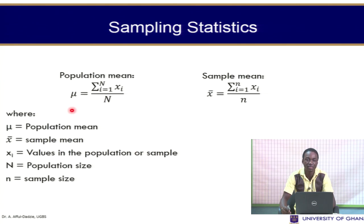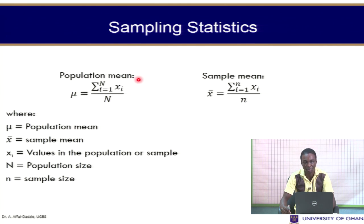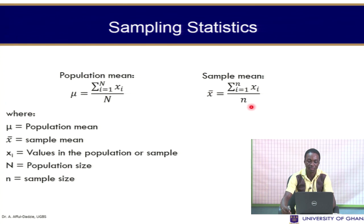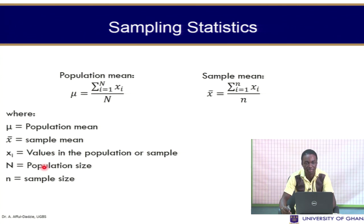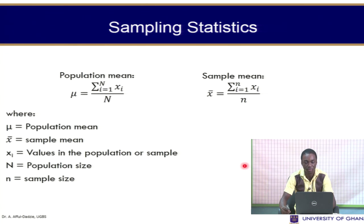The population mean is given as the sum of all the possible values within the population divided by the population size. The sample mean is also the sum of all possible values within the sample divided by the sample size. Here, mu is the population mean, x-bar is the sample mean, x represents the values in the population or the sample, big N is the population size, and small n is the sample size.